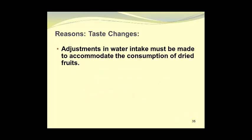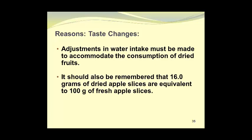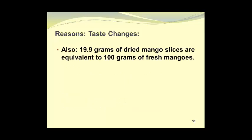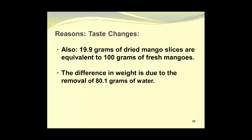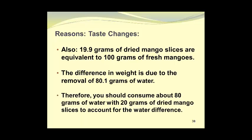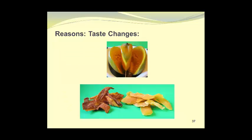Adjustments in water intake must be made to accommodate the consumption of dried fruits. It should also be remembered that 16 grams of dried apple slices are equivalent to 100 grams of fresh apple slices, and the difference in weight is 84 grams of water. Also, 19.9 grams of dried mango slices are equivalent to 100 grams of fresh mangoes. The difference here in weight is due to the removal of 80.1 grams of water. Therefore, you should consume about 80 grams of water with 20 grams of dried mango slices to account for the water difference. Here we see some fresh mango and the dried mango slices — the ones on the left have been air dried, and the ones on the right have been dried by osmotic dehydration plus some air drying as well.